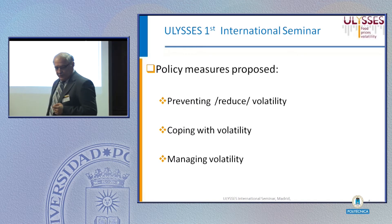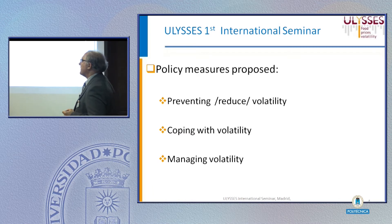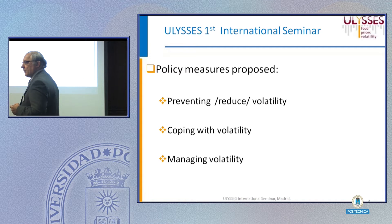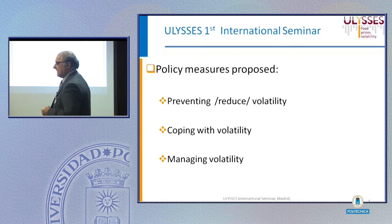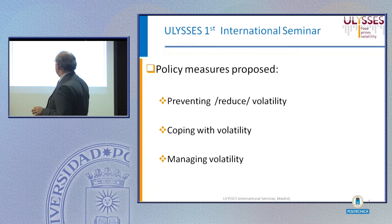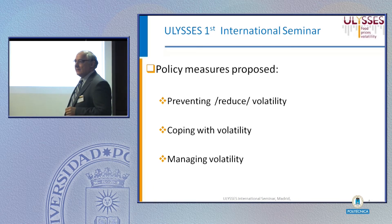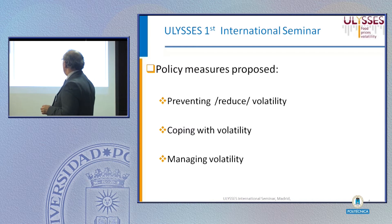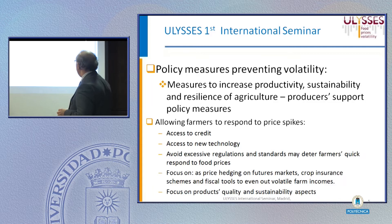Following the literature review and the recommendations and the main body of all these researches, the policy measures proposed to deal with price volatility — not making a very comprehensive classification — can be grouped into three categories: measures which prevent volatility or reduce it, measures which cope with volatility, and measures with which we manage volatility.